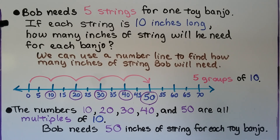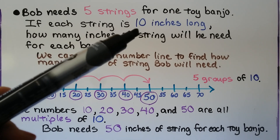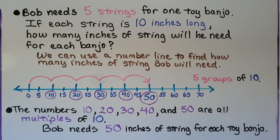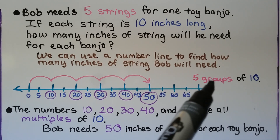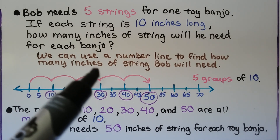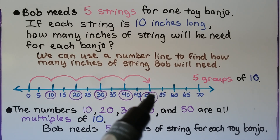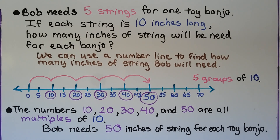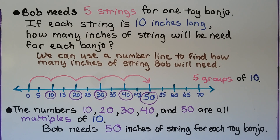Bob needs 5 strings for 1 toy banjo. If each string is 10 inches long, how many inches of string will he need for each banjo? He's going to need 5 groups of 10. We can use a number line — we make 5 jumps and skip count by 10: 10, 20, 30, 40, 50. The numbers 10, 20, 30, 40, and 50 are all multiples of 10. So Bob needs 50 inches of string for each toy banjo.